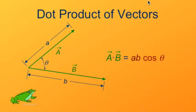This is how a dot product between vectors works. Here I've got two general vectors, a and b. Vector a has magnitude lowercase a. Vector b has magnitude lowercase b.